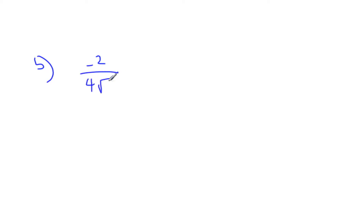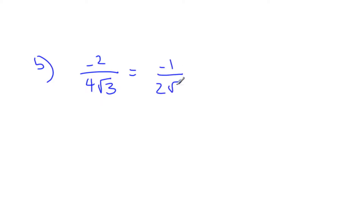Let's try another example. Let's say I have negative 2 over 4 square root 3. Before I rationalize it, let's simplify this fraction. I know negative 2 over 4 is the same as negative 1 over 2 root 3. That's just simplifying this part.